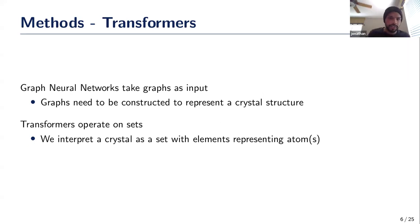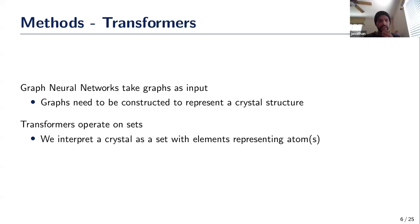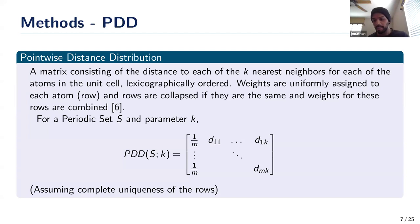Instead of using graph neural networks, we're going to use transformers. The key difference is that graph neural networks take graphs as input, requiring you to construct a graph representing a crystal structure, whereas transformers operate on sets — or equivalently, fully connected graphs. In our interpretation, each element of the set is either an atom or a group of atoms, which we'll discuss shortly.